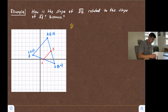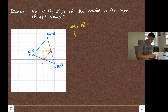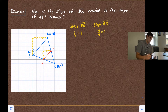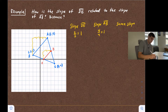For the slope of DE, we go up two and right two, so that's two over two which equals one. For the slope of AB, we go up four and right four, so four over four which is also one. They have the same slope, which means DE and AB are parallel.